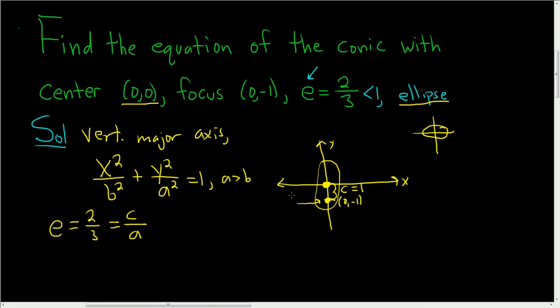So now we can go ahead and plug in our value of c. So we have 2 thirds equals 1 over a. Then we can cross multiply to solve for a, so a times 2 is 2a, and 1 times 3 is 3. And so we end up with a equal to 3 halves.